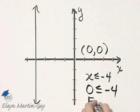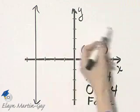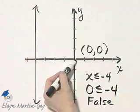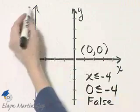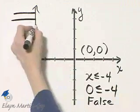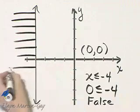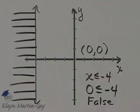Notice this is a false statement, which means I do not shade the side of the line where my test point lies. I shade the other side of the line. So this is the graph of x less than or equal to negative 4.